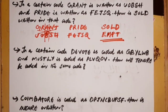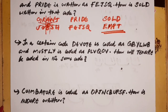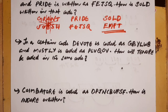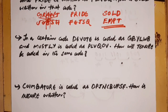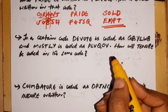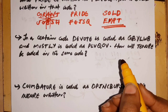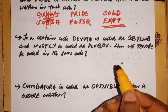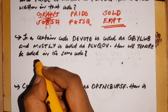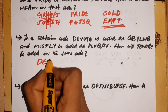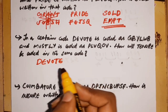Let's take the second question. Coding and decoding is simple. I am going to cover questions seen in net exams. In a certain code, DEVOTEE is called as GBYLW and MOSTLY is called as PLVQOV.